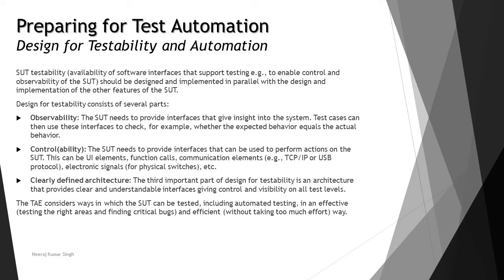Understanding the design of testability further, it generally consists of several parts which we can classify into three categories: observability, controllability, and clearly defined architecture. When you talk about observability, the SUVT needs to provide an interface that gives insights into the system — where you can understand whether what we wanted to perform is clearly visible on the application, and whether the expected result equals the actual result can be mapped if the system supports a clear visible output.